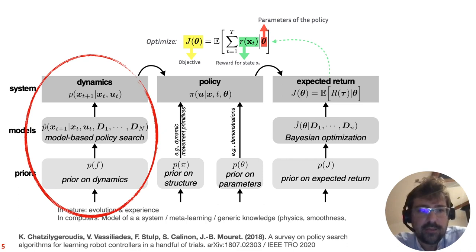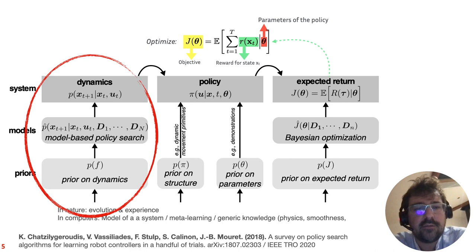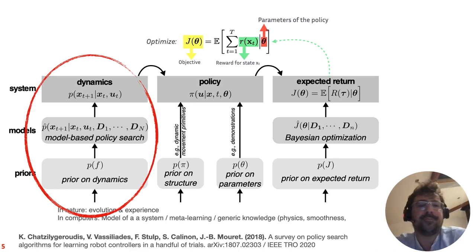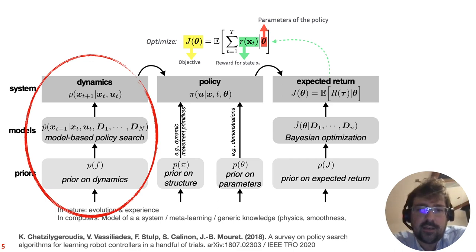How can we make things much more data-efficient? There are two main ideas. The first is to use models. If you have a model, you can make predictions and use the model instead of the real system — basically, learn some kind of simulator. You can model the dynamics, which corresponds to a simulator, or you can learn a model directly of the expected return, which corresponds to Bayesian optimization. That means that given some parameters, you can already predict what the performance would be.